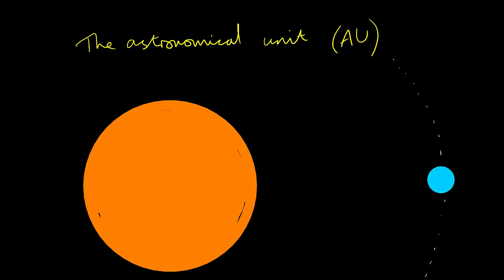First, the astronomical unit. This is simply the mean distance between the Earth and the Sun. That's 1.50 times 10 to the power of 11 meters.